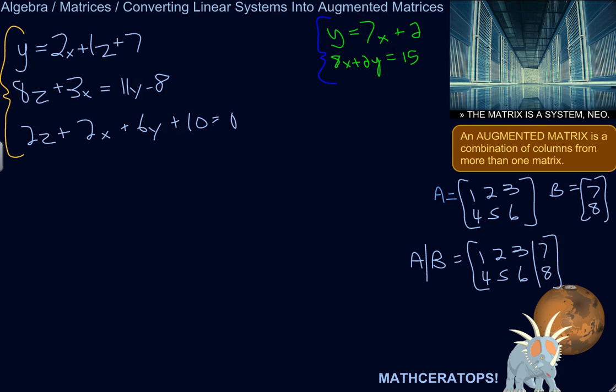We could look at a very simple system here: y equals 7x plus 2 and 8x plus 2y equals 15. We need to rewrite these equations so that their variables line up with each other, just like if you're doing the elimination method.